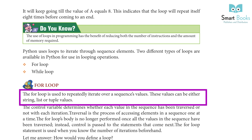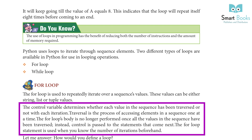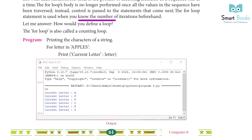The for loop is used to repeatedly iterate over a sequence of values. These values can be strings, lists, or tuples. The control variable determines whether each value in the sequence has been traversed with each iteration. Traversal is the process of accessing elements in a sequence one at a time. The for loop's body is no longer executed once all values in the sequence have been traversed; control passes to the next statement. The for loop is used when you know the number of iterations beforehand, and it is also called a counting loop.